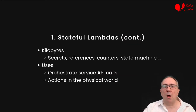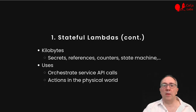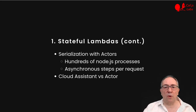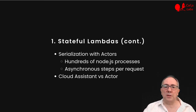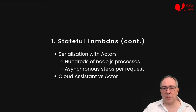Stateful lambdas in KVS operate on kilobytes of data, not on large datasets. They can hold secrets or references to external blobs of data, or counters, or they could encode a state machine. We use them to orchestrate service API calls and to trigger actions in the physical world — both require state to make them safe and reliable. We enforce strict serialization of calls with the actor model. Hundreds of Node.js processes could be run in your app, but there is at most one actor instance with a given ID. This actor has a queue for pending requests, waiting for all the asynchronous steps of the current one to finish. In KVS, we call actors cloud assistants, or CAs, to make clear that this is not a general-purpose actor system.